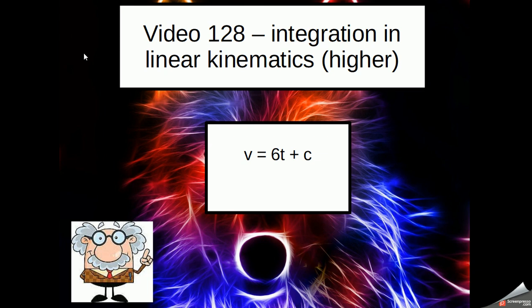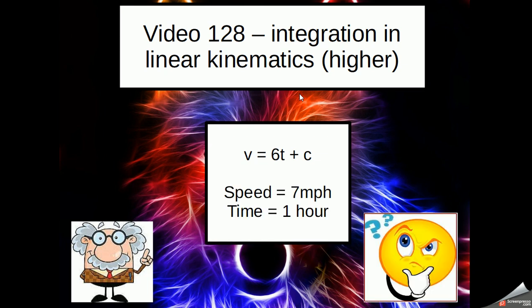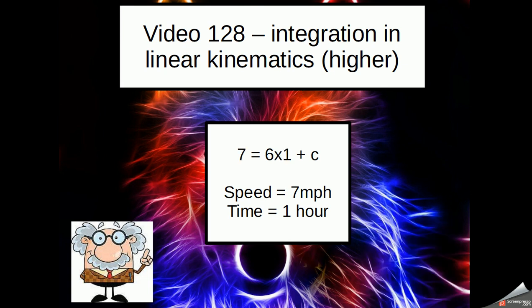But in a question, they might actually give you numbers and values that allow you to work out the constant on the end. For instance, if they told you the speed is 7 miles per hour and the time at that point is 1 hour, we can now work out the constant by substituting in the values.